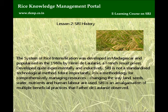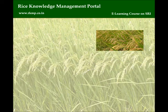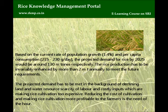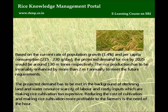SRI is an amalgamation of multiple beneficial practices that Father de Lauleni observed. Based on the current rate of population growth — 1.4% — and per capita consumption of 215-230 grams per day, the projected demand for rice by 2025 would be around 130 metric tons. The rice production has to be enhanced by more than 2 metric tons annually to meet future requirements. The projected demand has to be met against a backdrop of declining land and water resources, scarcity of labor, and costly inputs, which are making rice cultivation too expensive.